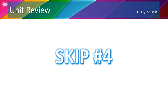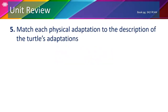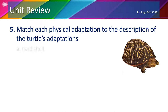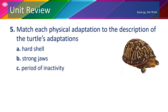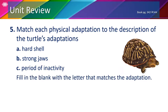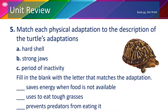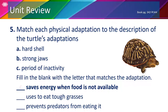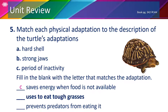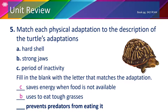For number 4, skip it and move to number 5 on the next page. In number 5, we will match each physical adaptation to the description of the turtle's adaptations, which are A. Hard shell; B. Strong jaws; and C. Period of inactivity. Let's fill in the blanks: 'Saves energy when food is not available' — a turtle can stay unmoving for a long period of time when it does not have enough food, so the answer is C. 'Uses to eat tough grass' — the key word is tough, so a turtle needs strong jaws, answer is B. And 'prevents predators from eating it' — predators will avoid eating a turtle because of its hard shell, so the answer is A.